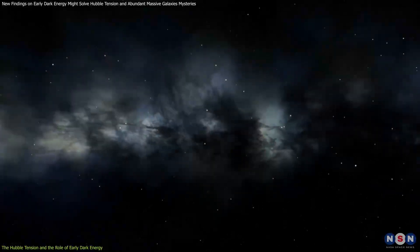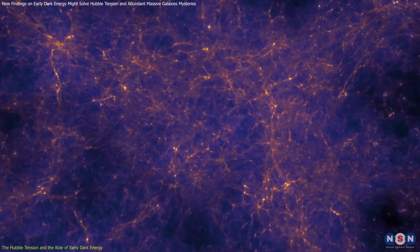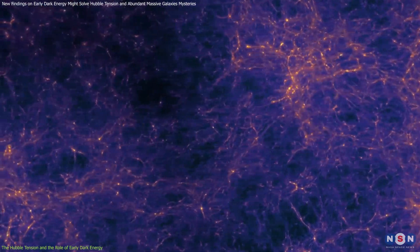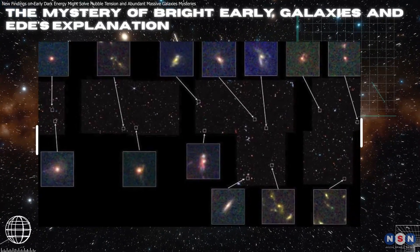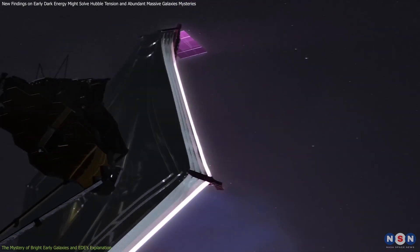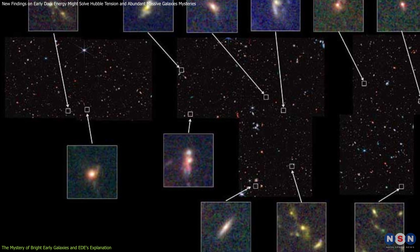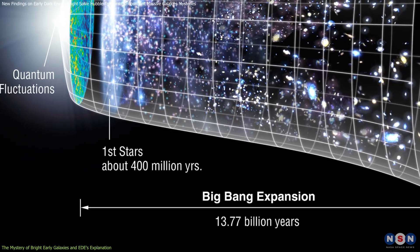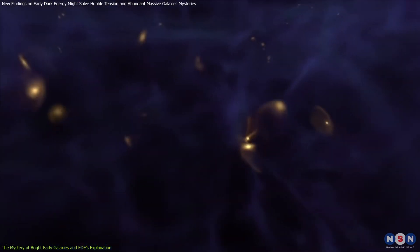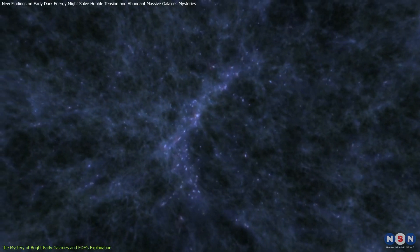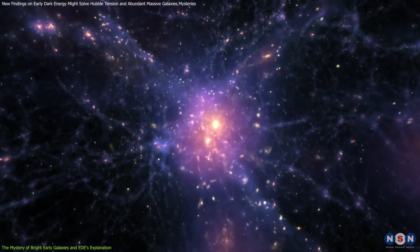If early dark energy truly existed, it could help us understand other phenomena tied to the early universe, such as the formation of the first structures and the evolution of cosmic inflation. The James Webb Space Telescope has revealed a surprising abundance of bright, massive galaxies that existed when the universe was only about 500 million years old, just 3% of its current age. These galaxies, comparable in size and brightness to the Milky Way, challenge our understanding of how galaxies form, which typically involves a slow process over billions of years as gas cools and condenses into dark matter halos.